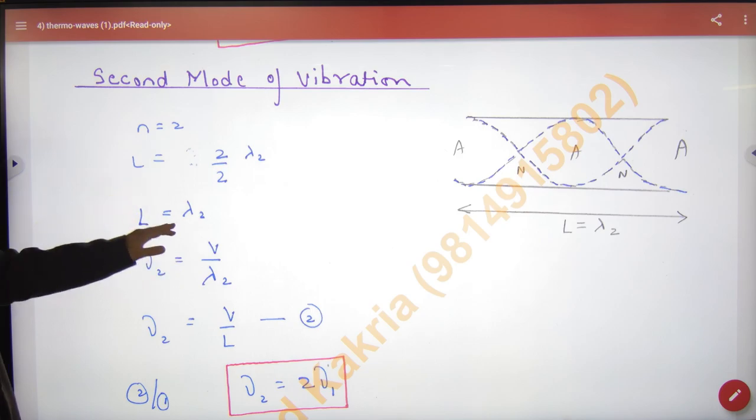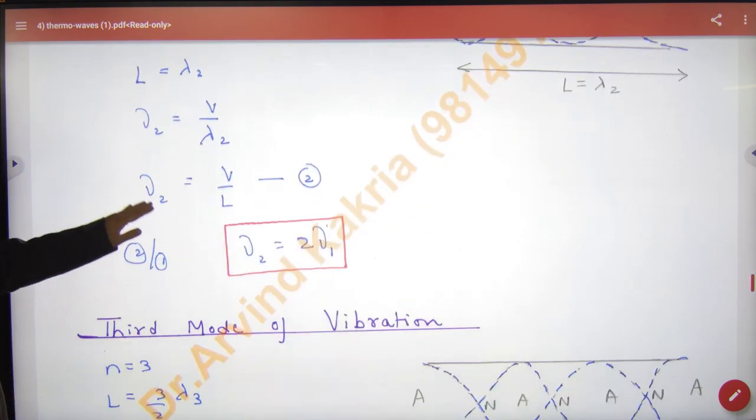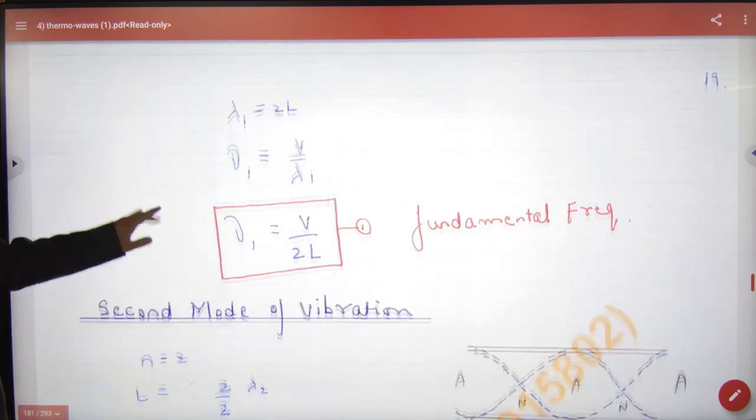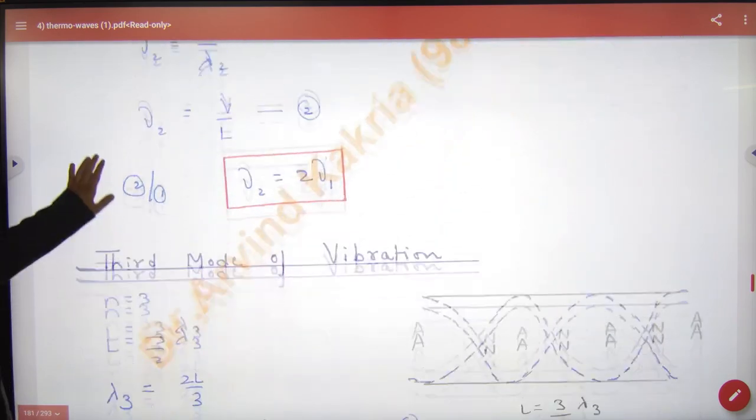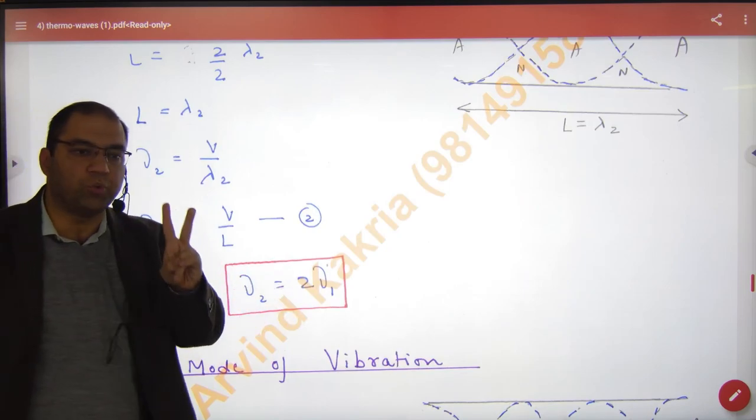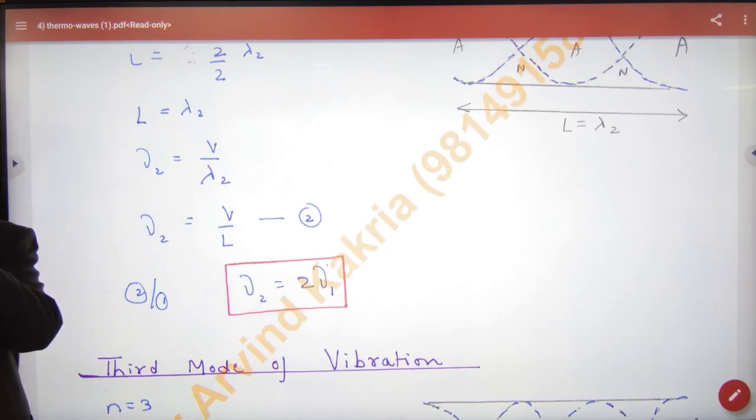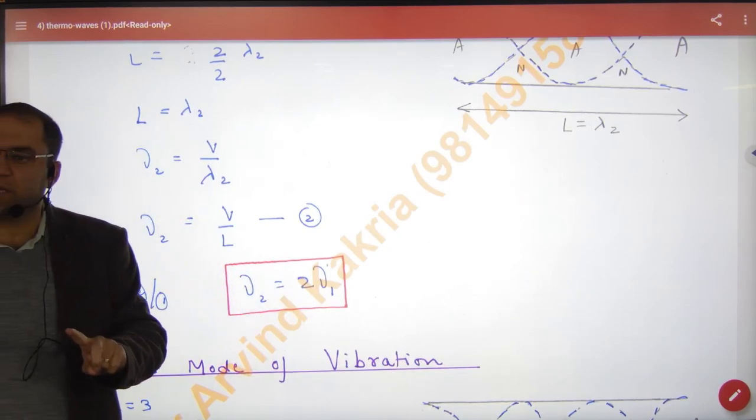Next step. What is v by lambda 2? Lambda 2 is equal to L, so this is second frequency. We divide with the first equation. V by L cancel, what will answer? New 2 is 2 times new 1. The first frequency is new 1, second frequency is 2 into new 1.